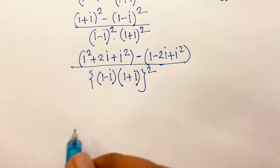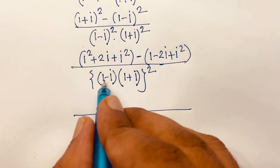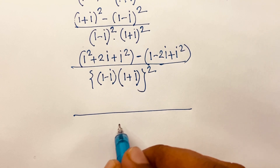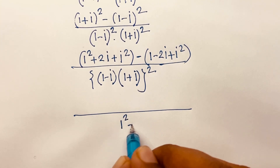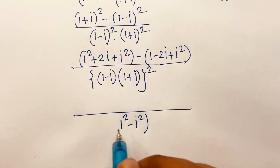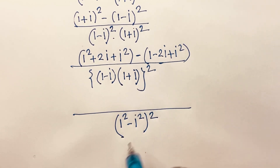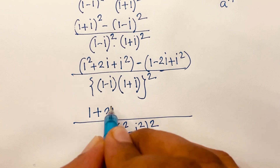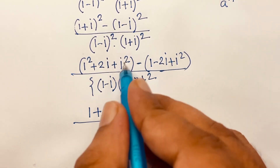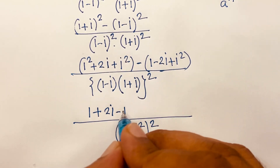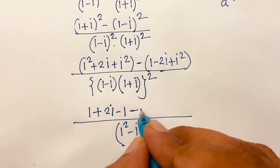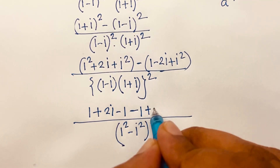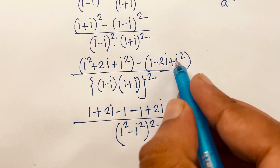For the denominator, I apply (a-b)(a+b) = a² - b², giving (1² - i²)². In the numerator, expanding (1+i)² gives 1 + 2i - 1 (since i² = -1), and expanding (1-i)² gives 1 - 2i - 1.